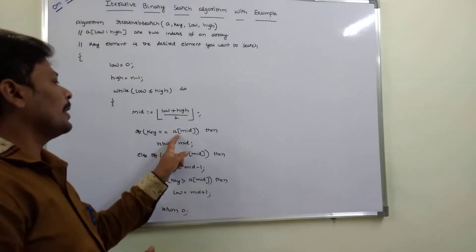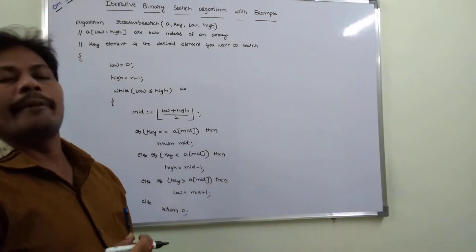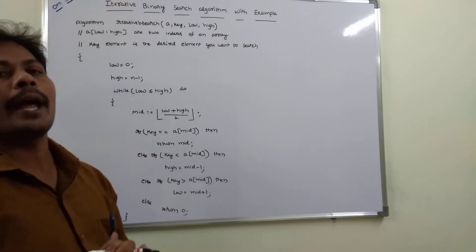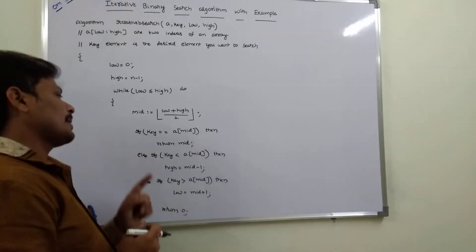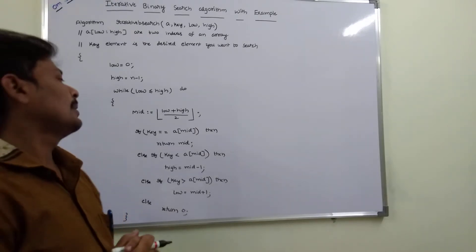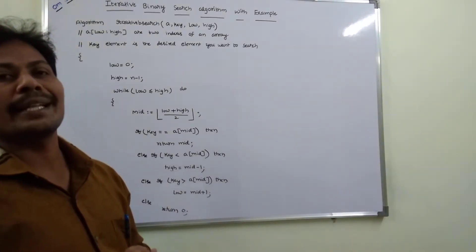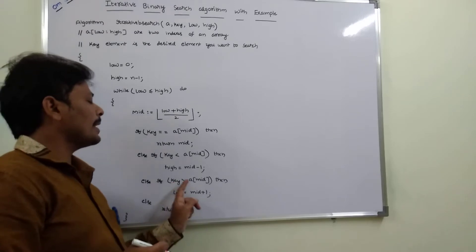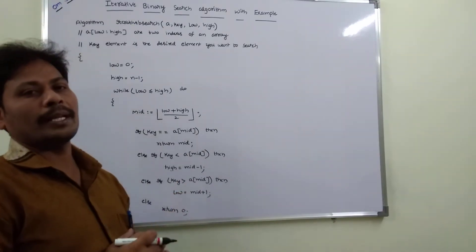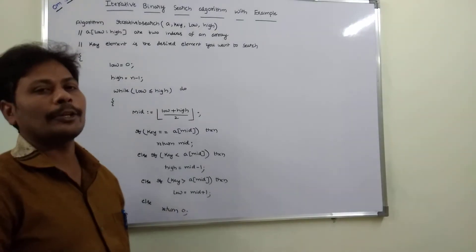If key equals A[mid], the key is found at the middle position — return mid. If key is less than the middle value, then high = mid minus 1, meaning our key element is in the left sublist. If key is greater than the middle value, then low = mid plus 1, meaning the key is in the right sublist. If the key element is not found at all, then return zero.